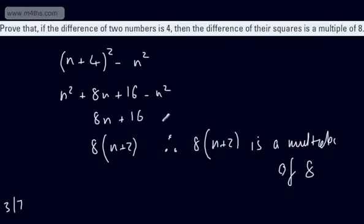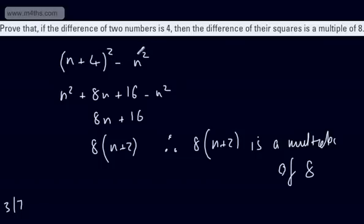Therefore 8 times (N plus 2) is a multiple of 8, and that would be a perfectly fine proof. You could have gone the other way — N squared minus (N plus 4) squared, or used N and N minus 4. It's entirely up to you. I try to avoid too many negatives when factoring, hence why I went that way. If you use N and N minus 4, that also gives quite nice factoring — just be careful that you can still factor it to get the answer.